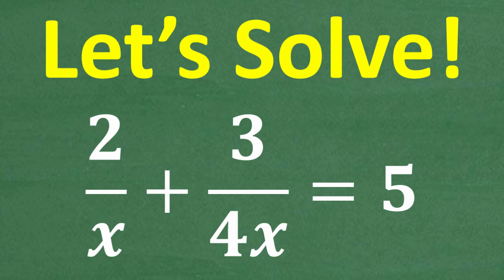So let's go ahead and solve this equation. This is 2 over x plus 3 over 4x is equal to 5. We're going to be solving this equation here in just one second.